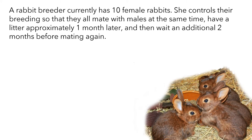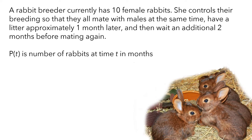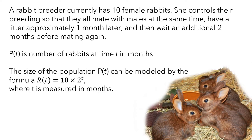A rabbit breeder currently has 10 female rabbits. She controls their breeding so that they all mate with males at the same time, have a litter approximately one month later, and then wait an additional two months before mating again. p is the number of rabbits at time t in months, and the size of the population p can be modeled by the formula p equals 10 times 2 to the t, where t is measured in months.